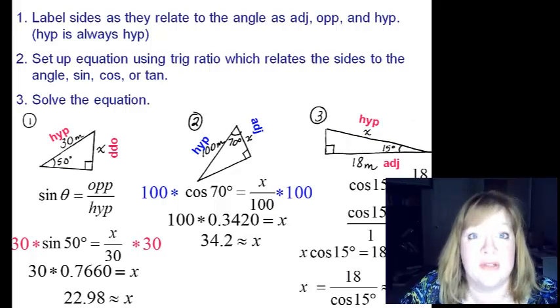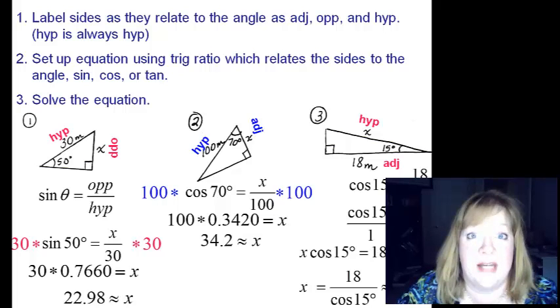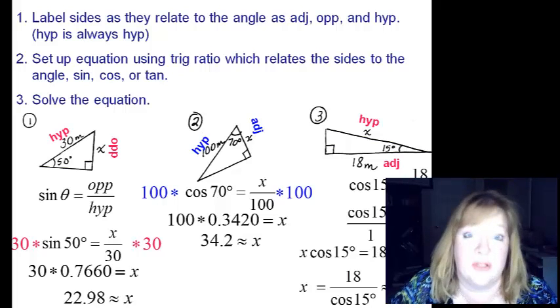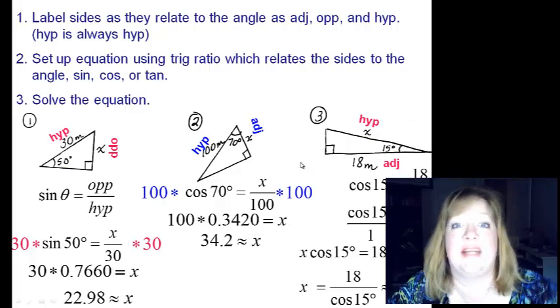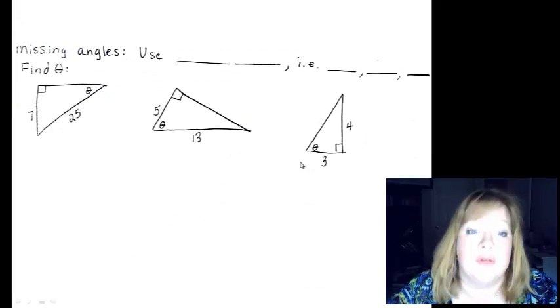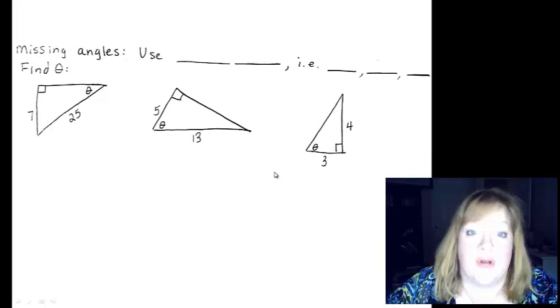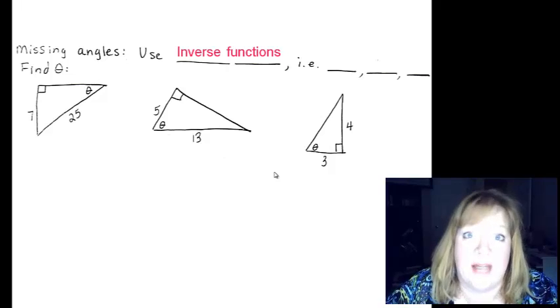That's how you use the trig ratios to find the side of right triangles. You're going to have a practice sheet on that tomorrow. Let's look at how to find the angles. So if we're looking for missing angles, always use the inverse functions.